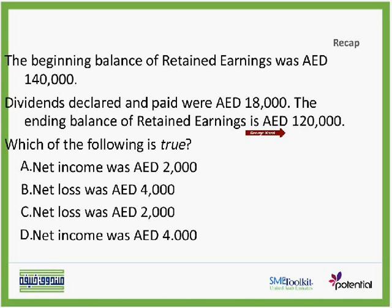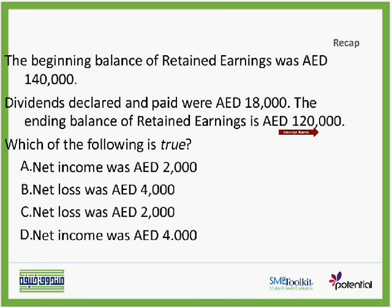As we have seen before, profit will increase the asset and a loss will decrease the asset. So $122,000 was reduced to $120,000, which means the company effectively lost $2,000. So the correct answer should be C.